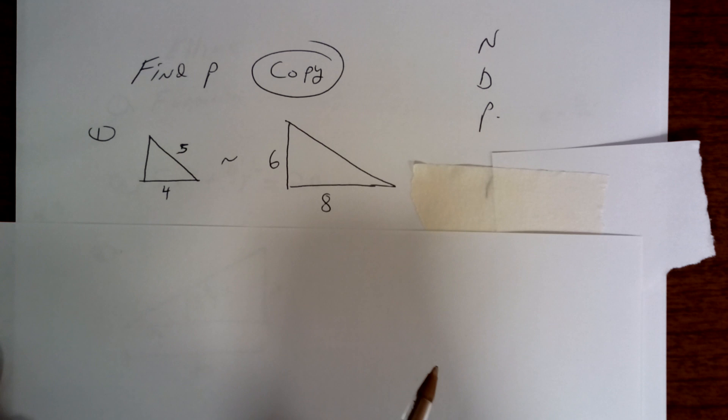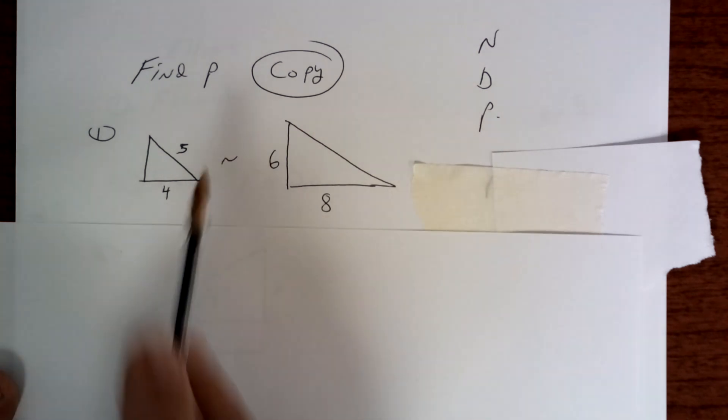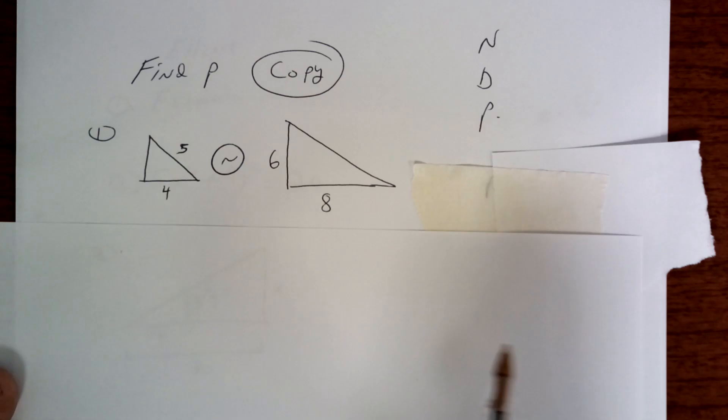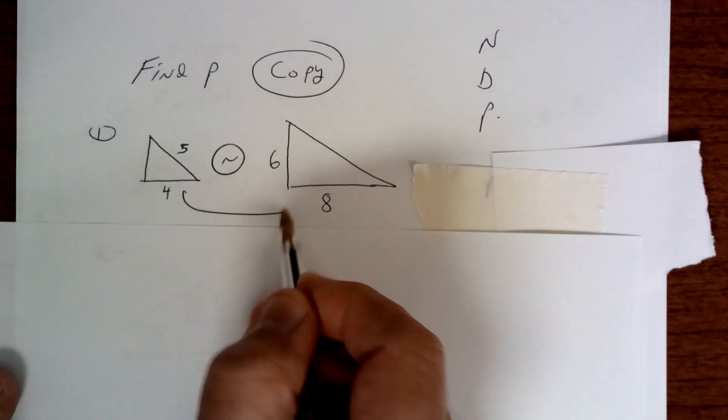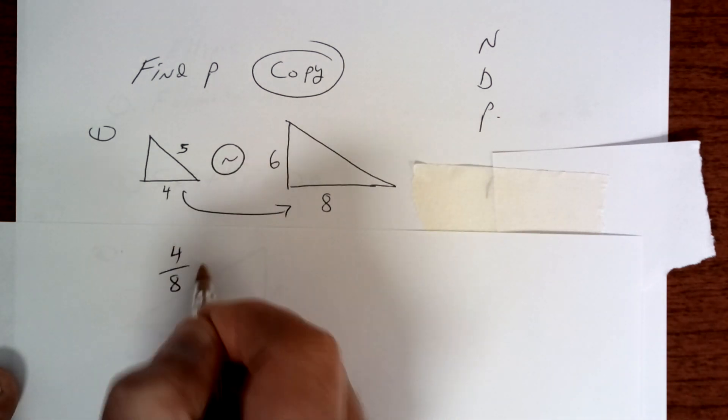So if you look here, they're similar. And since they're similar, the ratio is going to be the same. So if you take the bottom over the bottom and reduce it, you get one-half.